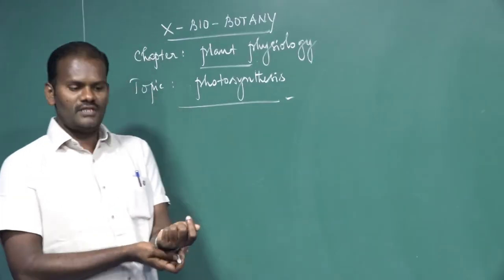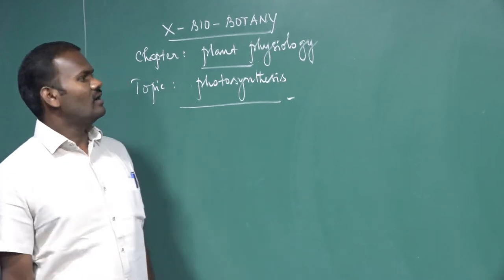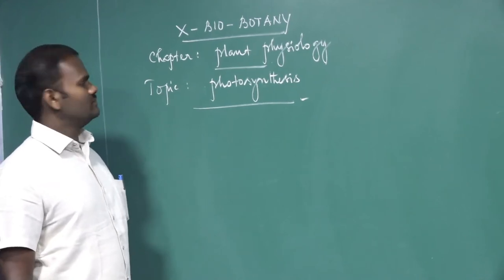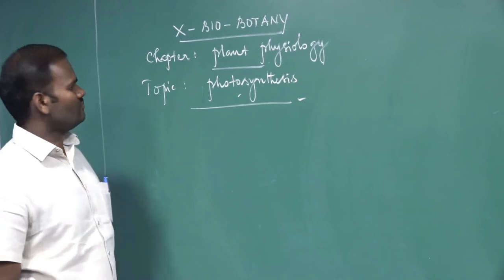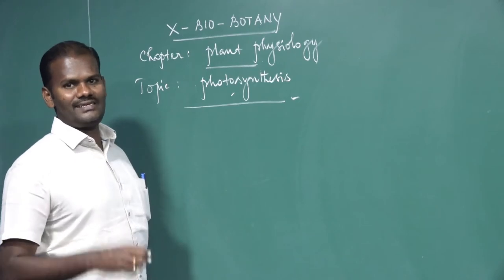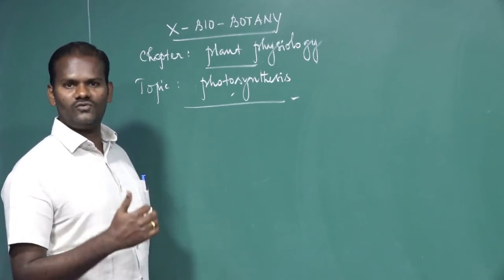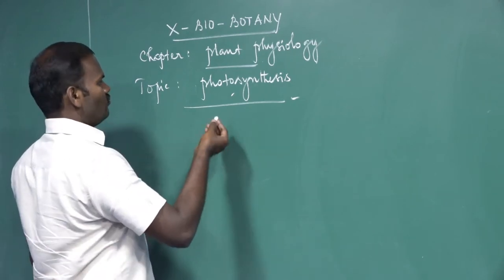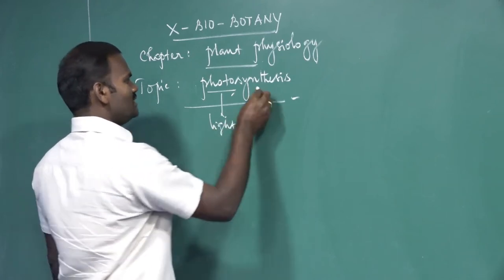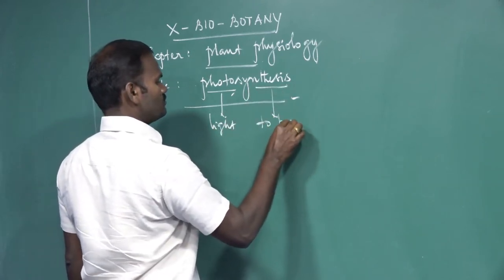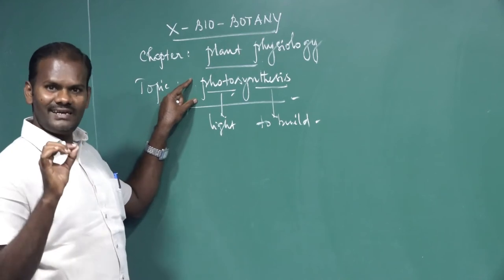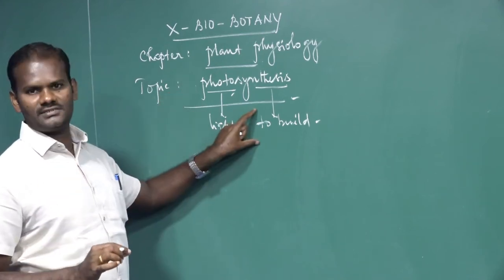Good evening students, welcome back. In these videos we are going to discuss one of the tenth chapter on physiology. The topic is photosynthesis — what do you mean by photosynthesis, where does it occur, and what is the importance of photosynthesis. Define photosynthesis: the word 'photo' means light, and 'synthesis' means to build or manufacture. So the term photosynthesis literally means synthesis with the help of light.